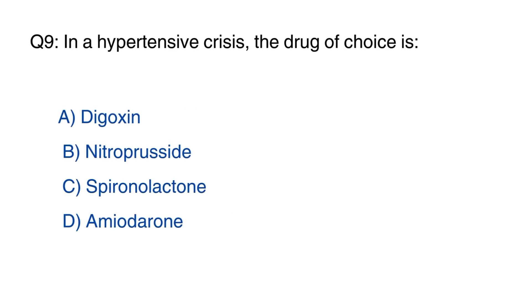Question number 9: In a hypertensive crisis, the drug of choice is? The right option is option C.